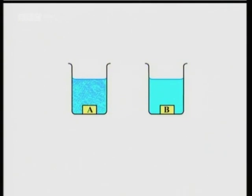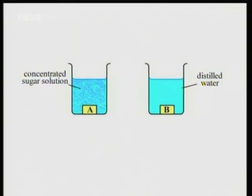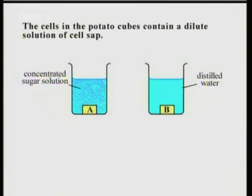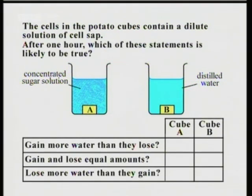Here's a sample question about osmosis in plant cells. The diagram shows two cubes of potato, A and B. Cube A is in a concentrated sugar solution, and cube B is in distilled water. The cells in the potato cubes naturally contain a dilute solution of cell sap. After one hour, which is likely to be true for cube A and cube B — do they gain more water than they lose, do they gain and lose equal amounts, or do they lose more water than they gain?